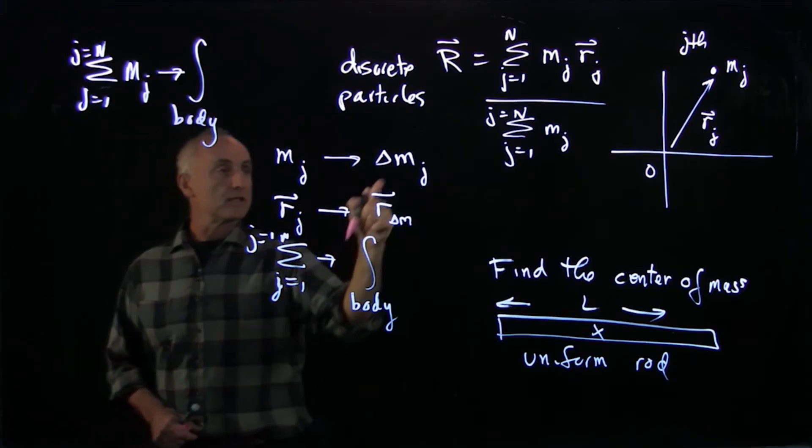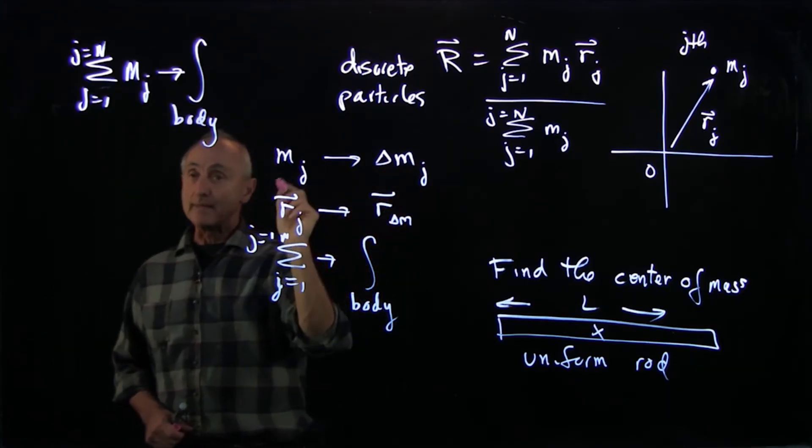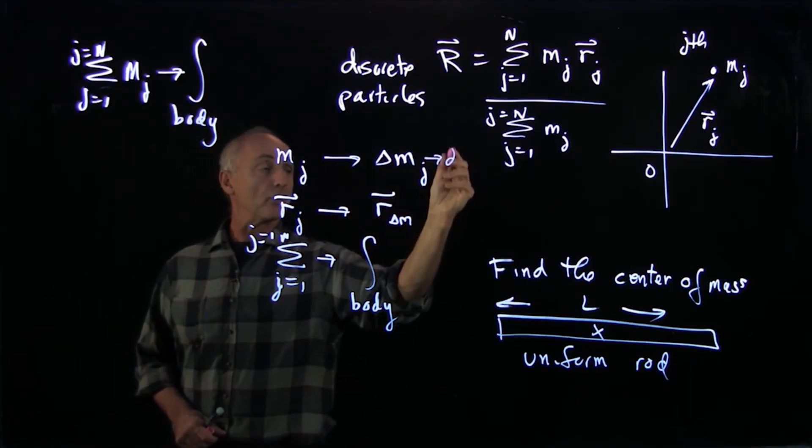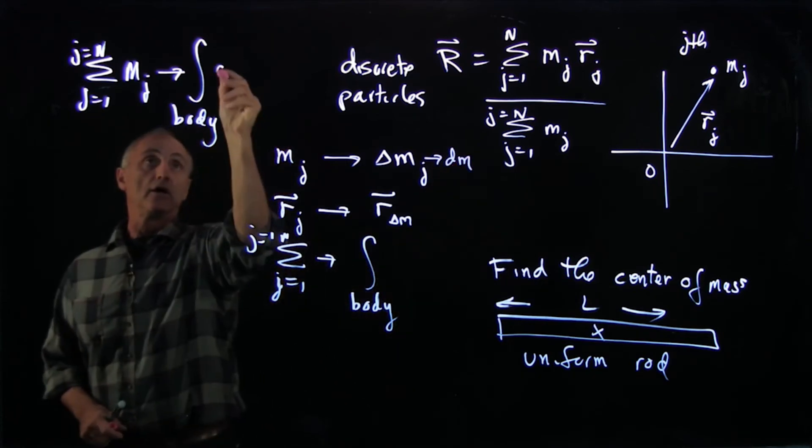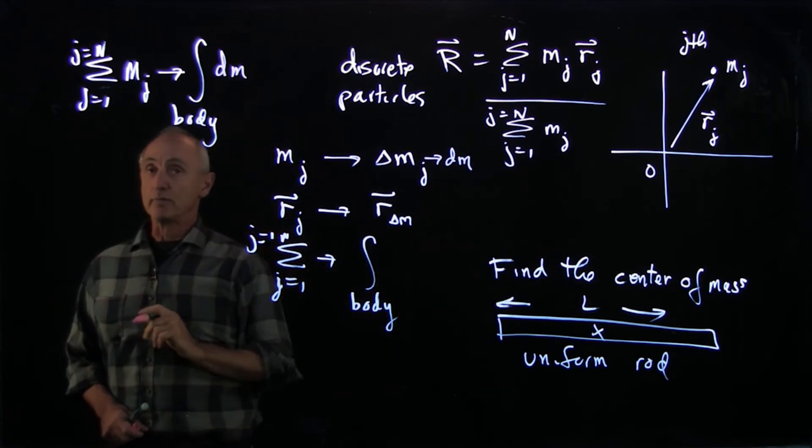The delta m, when we take limits, because that's where an integral goes, we'll write that as dm. So that becomes a limit over the body.